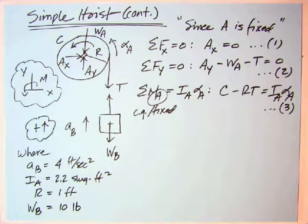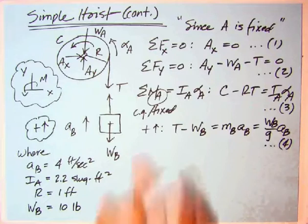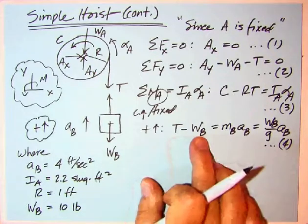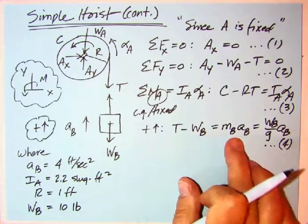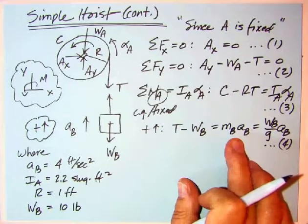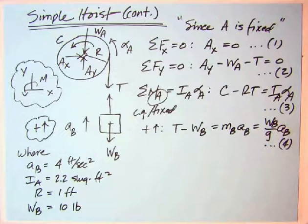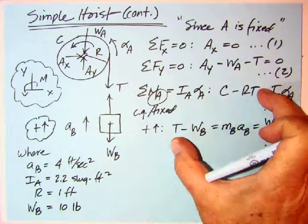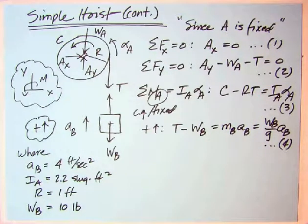Let's do block B like we did before. With positive up, we've got T minus WB equals mass times acceleration MB times A sub B. Again, this is U.S. system, so let's make that WB over G times A sub B, acceleration of B. And here, we're not looking for it. We're given that. But we still are connected. The two systems are connected through T. And they're also connected through the kinematics, which we need.